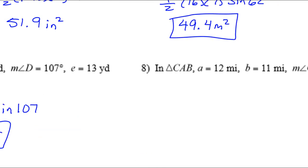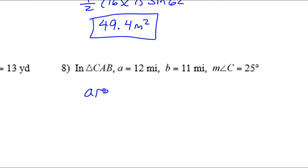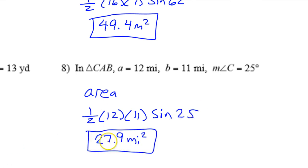How about number eight? If I want to find the area here, I've got two sides and the included angle. So that is going to be one-half side times side times the sine of the included angle. So I got 27.9 square miles.